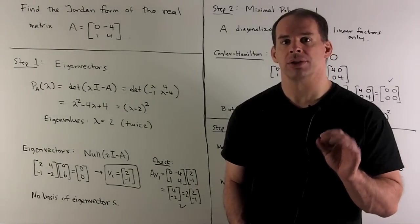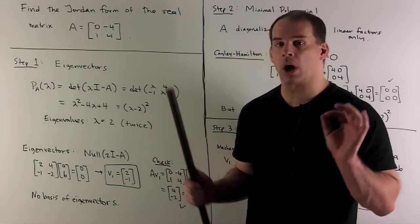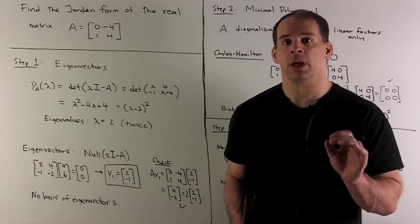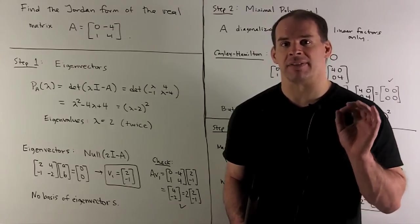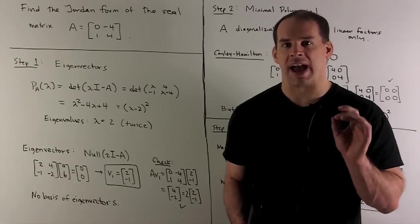Find the Jordan form of the real 2×2 matrix A = [[0, -4], [1, 4]]. The point of this problem: we're not going to be able to find a basis of eigenvectors. That means we can't put this matrix in diagonal form.